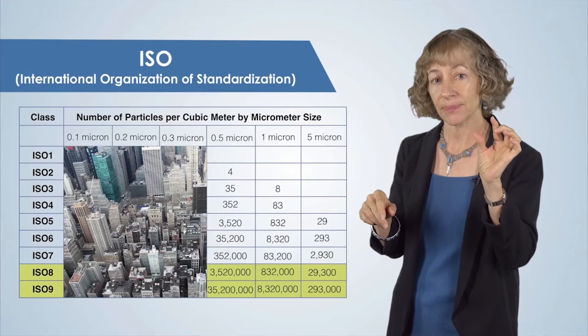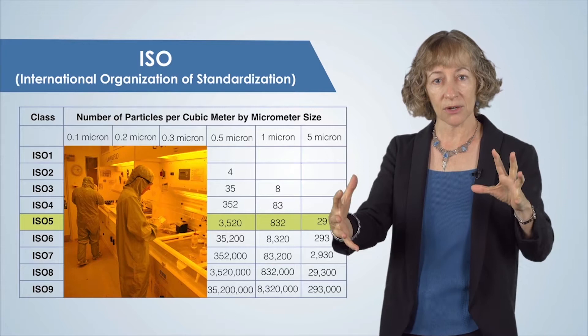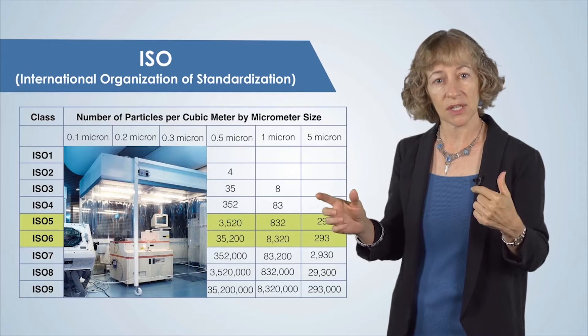In contrast, a typical clean room which is rated ISO 5 can only have 3,520 particles per cubic meter that are over a half micron in diameter. The clean rooms that you'll see in these videos are rated ISO 5 and 6.